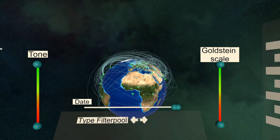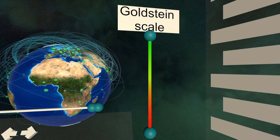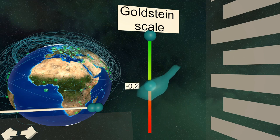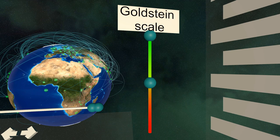To the right you'll find the Goldstein scale. This value gives an estimation on the impact an event had on the stabilization of the country based on the type of the event. To filter for events that improve the country stabilization, you'll need to grab the lower handle and adjust its value so that only positive values are within the selected range.